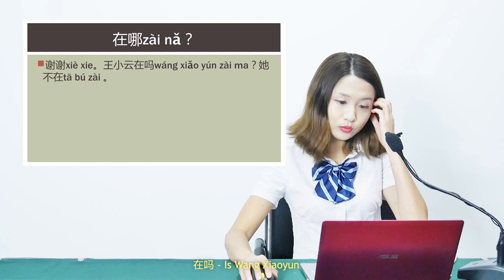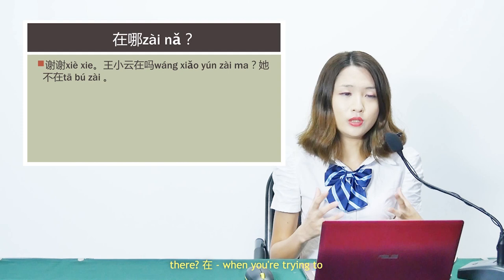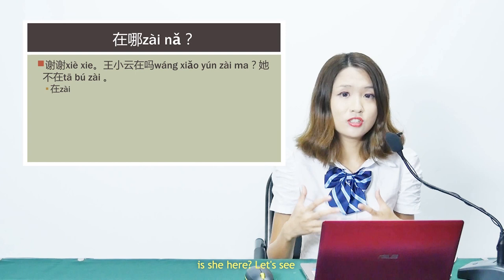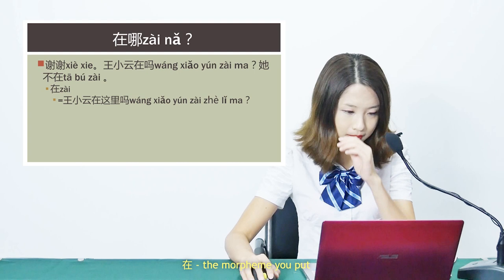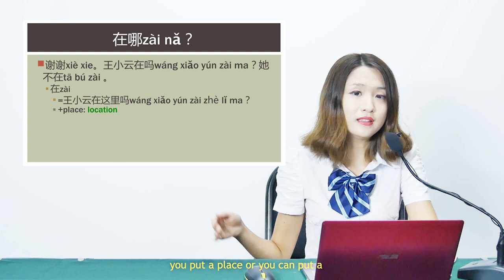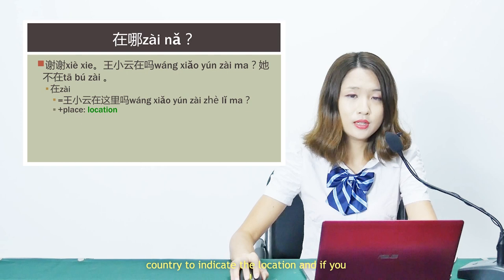王小云在吗? — Is 王小云 there? 在 is used when describing someone's location. In fact, 王小云在吗 is short for 王小云在这里吗 — is she here? 在 is the morpheme you put before a location. After the subject, you put 在, then a place, city, or country to indicate location. If you add verbs after 在, or verb phrases, it means someone is doing something.